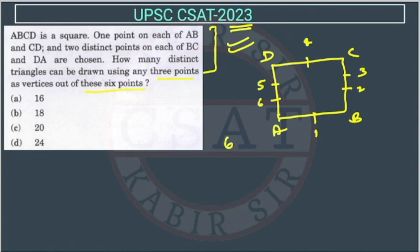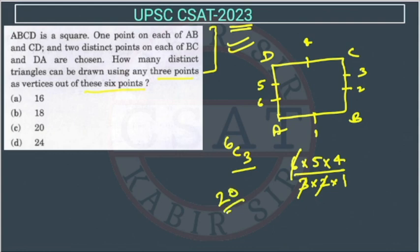So this is simple. This is 6C3 only, because these three points are not in one line. Total number of triangles will be 6C3. So this will be 6 into 5 into 4, divided by 3 into 2 into 1. This is 5 into 4, which is 20. So the answer is option C.